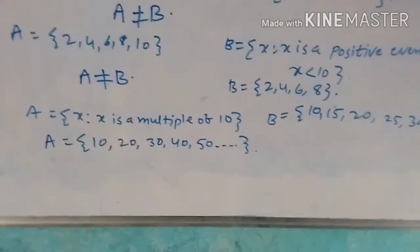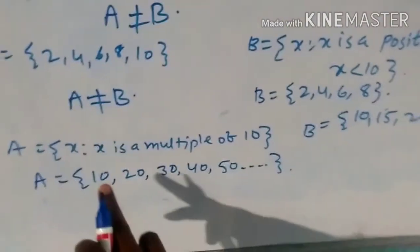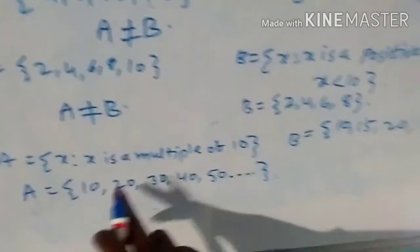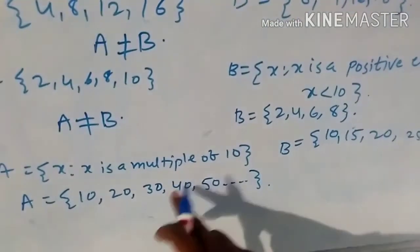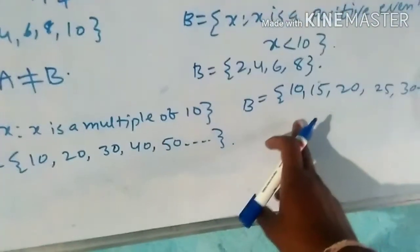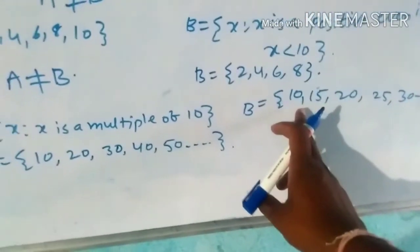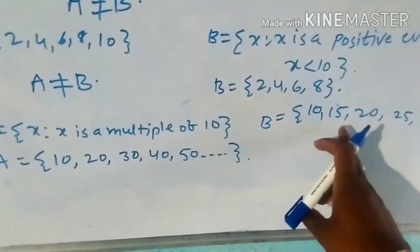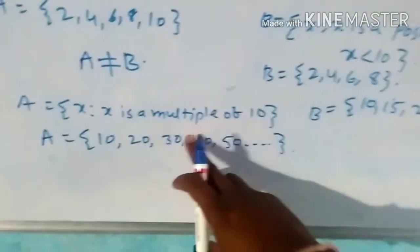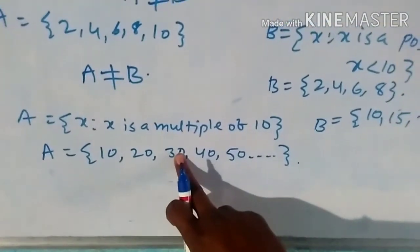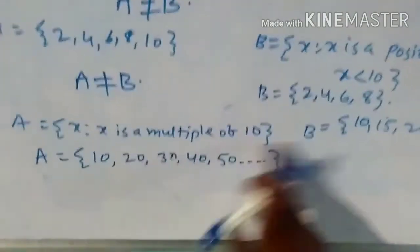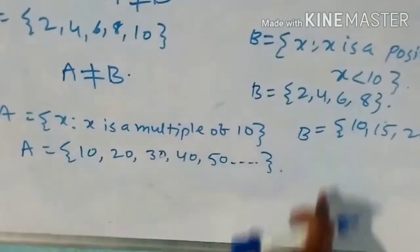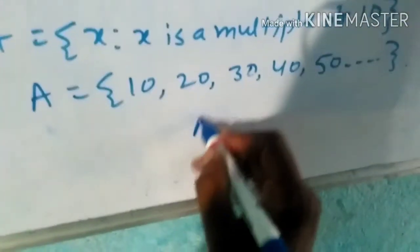Now for A to equal B, B must also equal A. But 15 is not present in A and 25 is not present in A. So in this situation A is not equal to B.